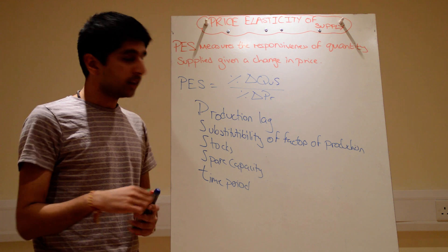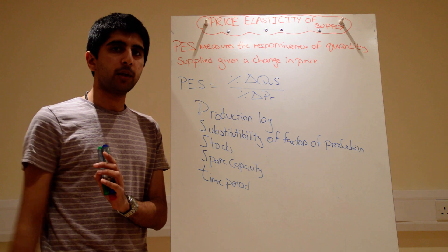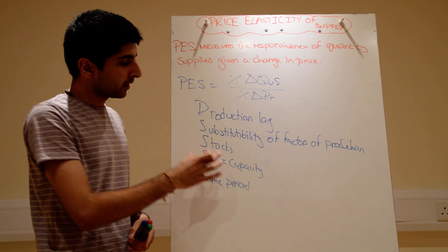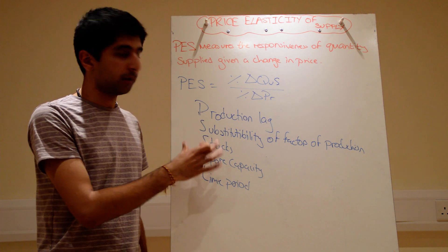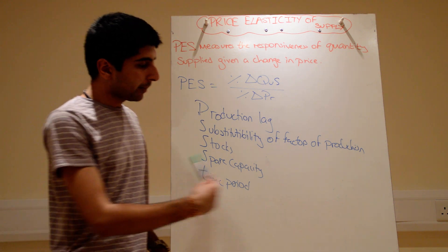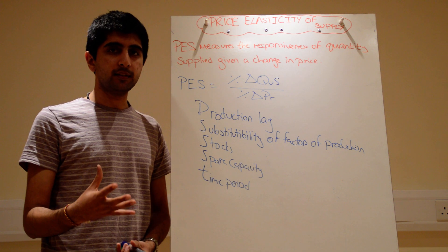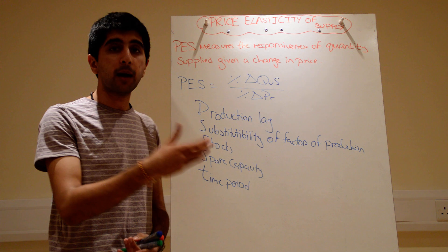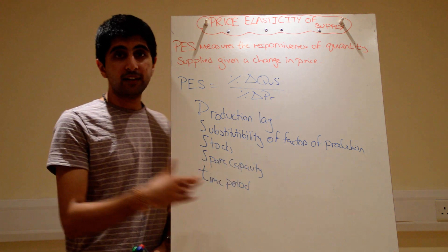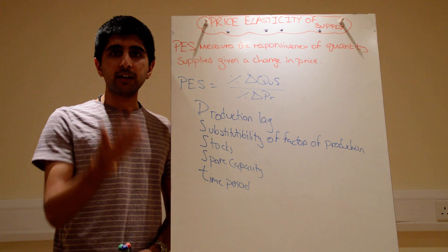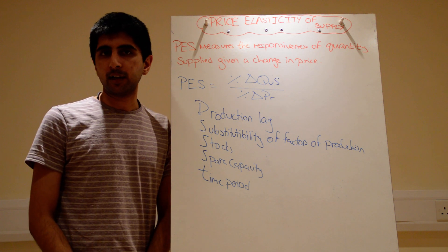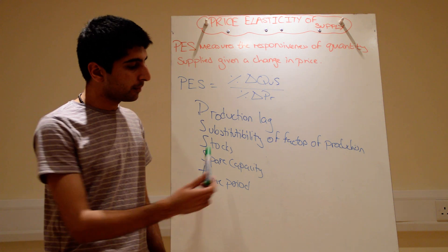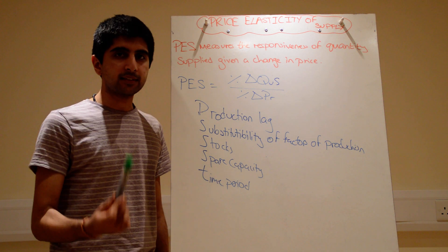Level of stocks: the more stocks there are in a warehouse, the more elastic supply will be. A firm can simply release some of those stocks onto the market if the price goes up. Spare capacity: if there's a large amount of spare capacity in the business, they can respond very simply to a change in price by increasing supply using that spare capacity. If a business is operating at 50% capacity and demand goes up, they can work at 60% or 65% — whatever is needed. So the more spare capacity there is, the more elastic supply will be.